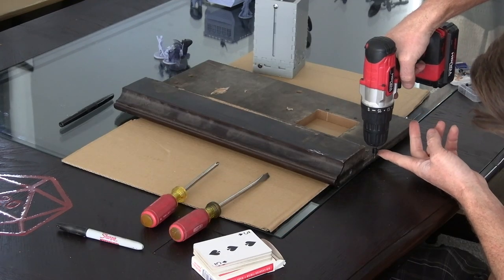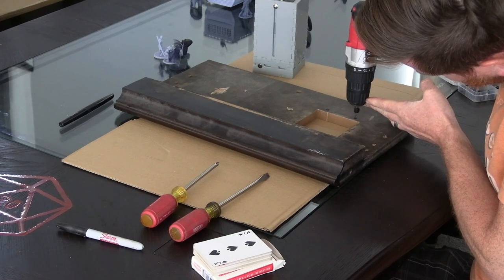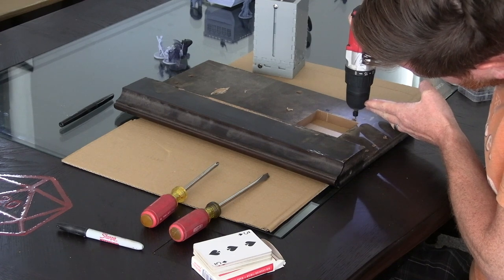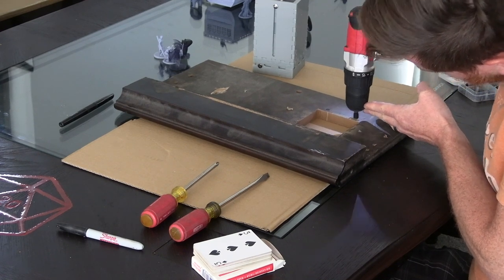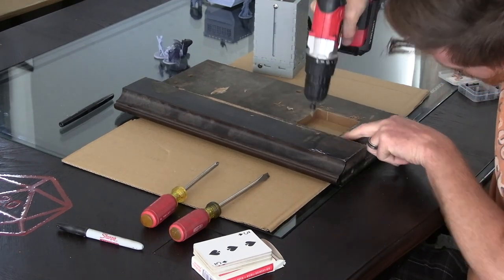Next we're going to drill four pilot holes for the four wood screws that will attach the brackets. Make sure that the drill bit that you're using does not protrude down further than the thickness of the table. If it does use an extra piece of wood on top of the table as a spacer to ensure that the drill bit doesn't go all the way through and ruin the finish.